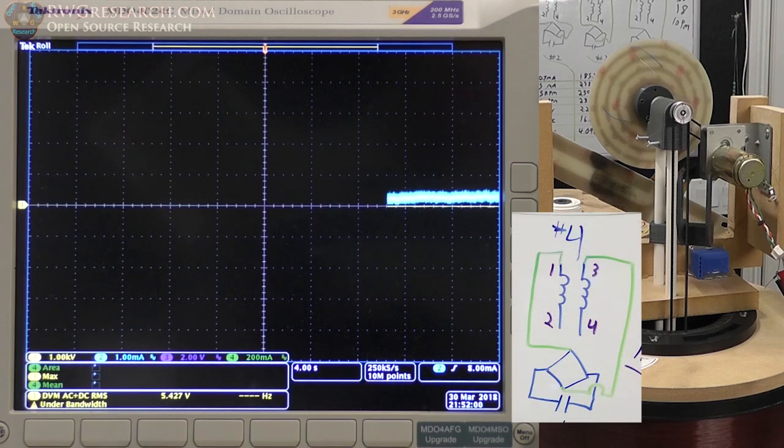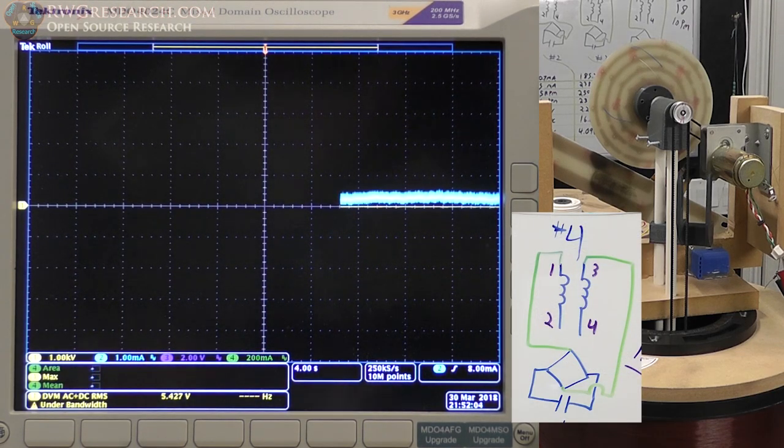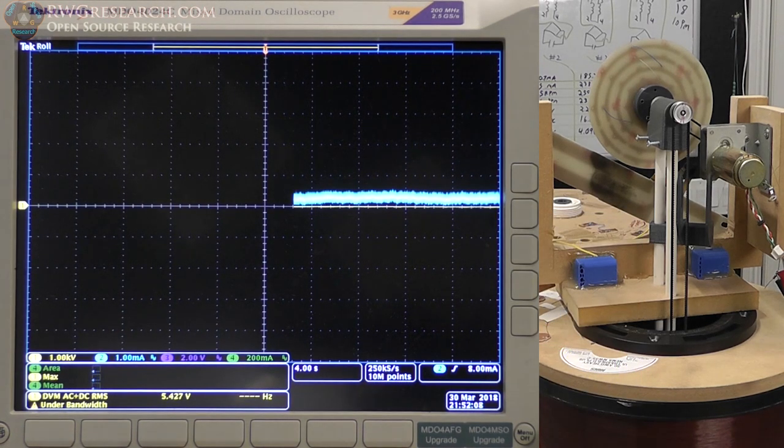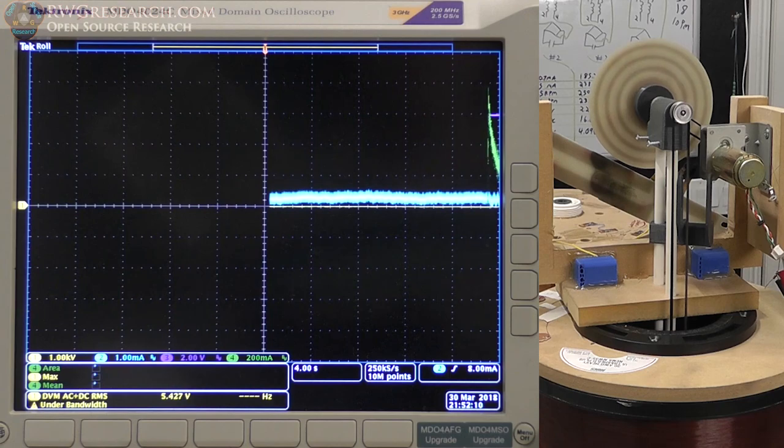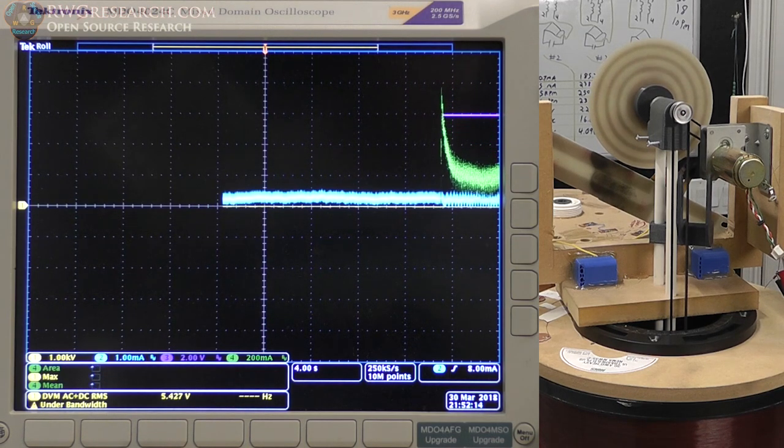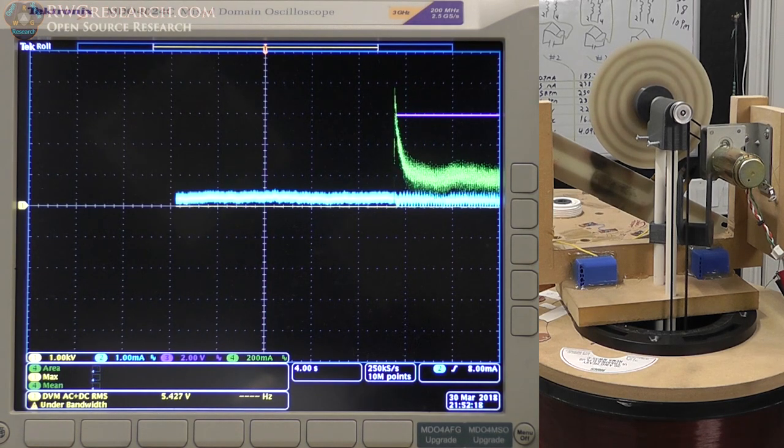Alright, so we are testing number four now. We have removed the short between the wires two and four, and now we're going to get a completely different result. Here we go. So turned on. Let it settle out.